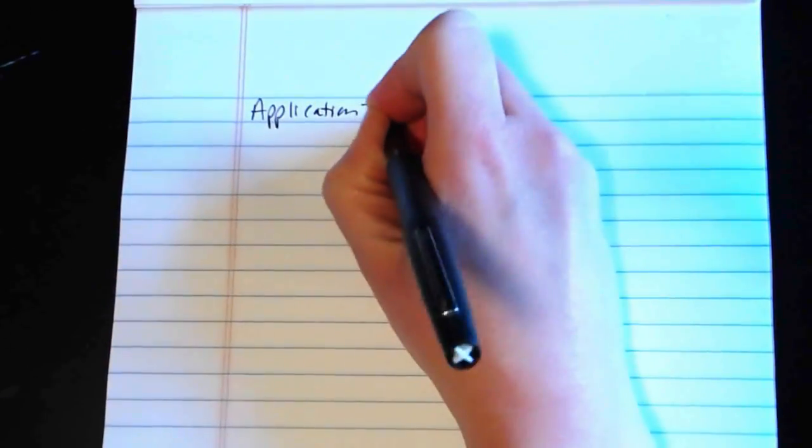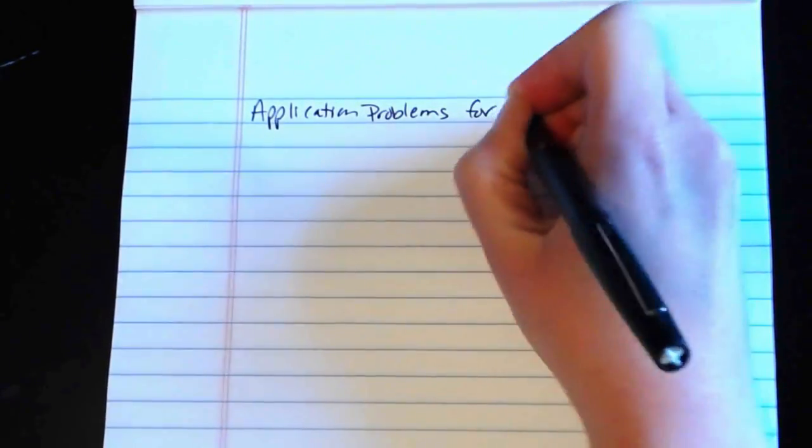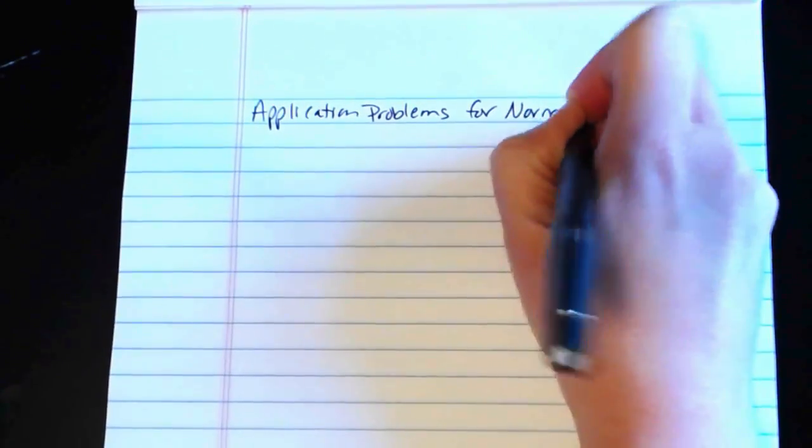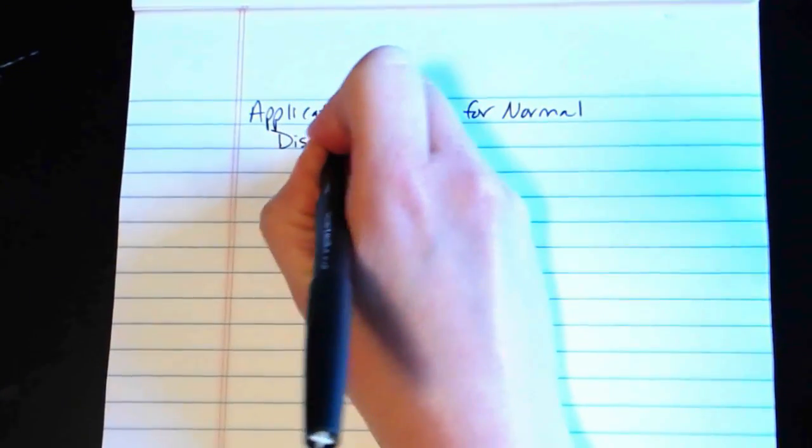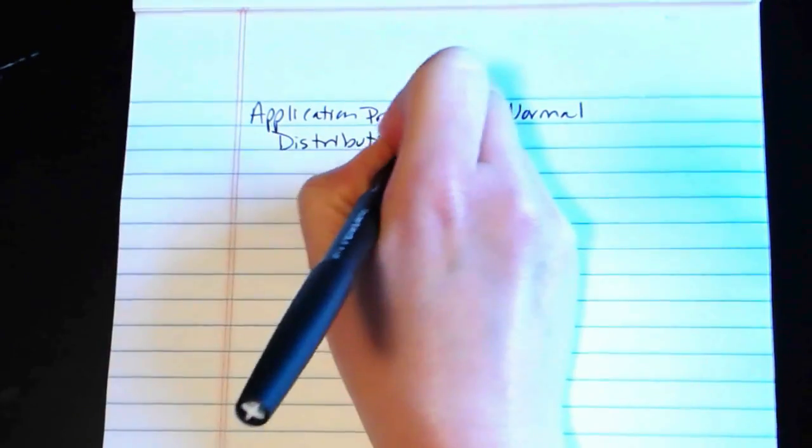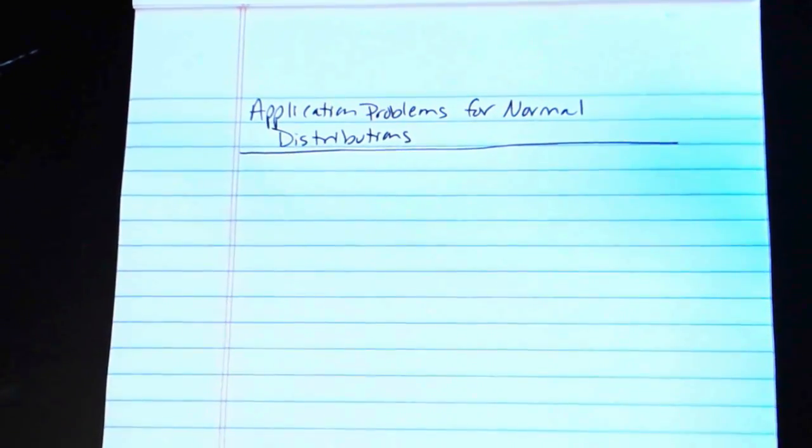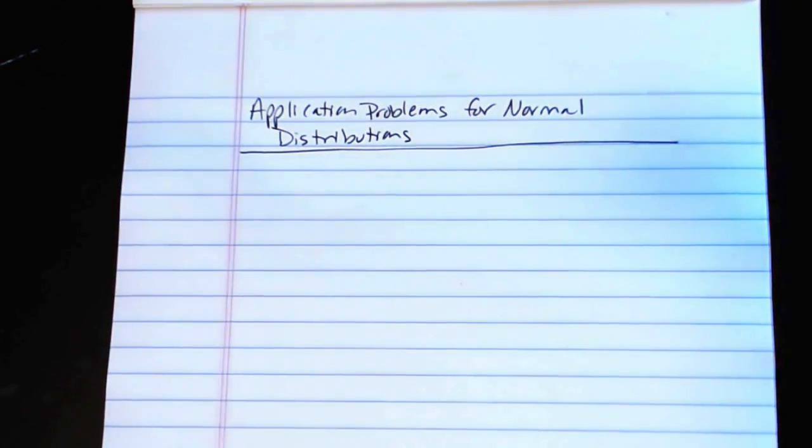But there will be some kind of imposed structure on top of that. There'll be a word problem type of structure, so we'll actually be trying to answer an applied problem. So we're looking at application problems for normal distributions, and generally speaking there is a helpful kind of process for doing an application problem that involves a normal distribution.